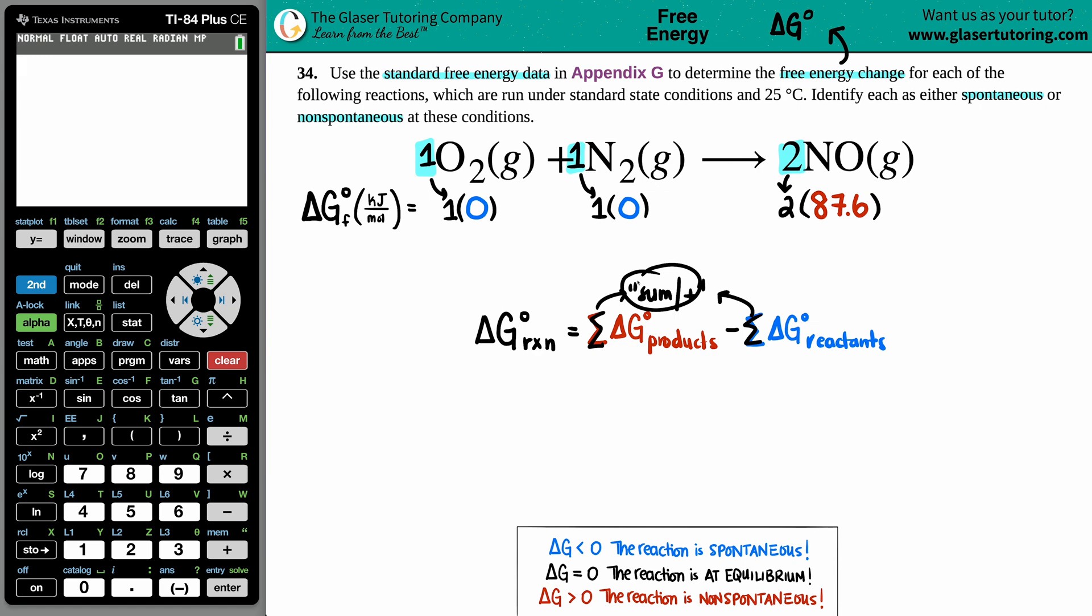Now we need to sum up the sides. Literally, it was O2 gas plus N2 gas. So this plus this. And zero plus zero is just zero. So we already know what that side is.